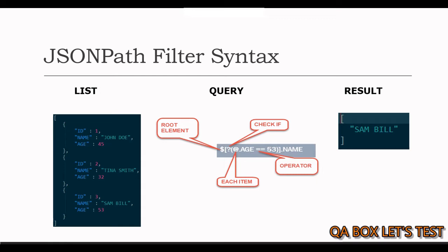So if the idea of using filters is sold to you, you might be interested in knowing the construct of building filter expressions. $ is the root node. Since this is a JSON array, we put opening and closing square brackets after the dollar sign. Inside, we first write the question mark followed by round parentheses. And inside these parentheses, we write the filter expression. In the filter expression, the @ symbol refers to the current node being processed. We then have a bunch of operators to check each item against a specific condition. In this example, we are filtering the JSON dataset to items where age equals 53, and from there retrieving their names.